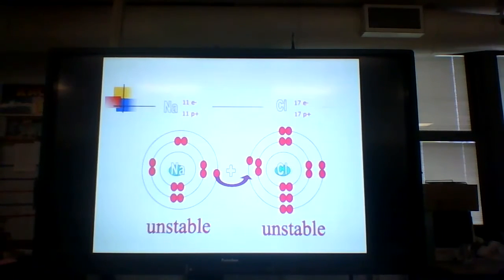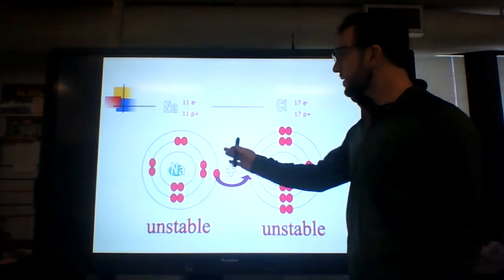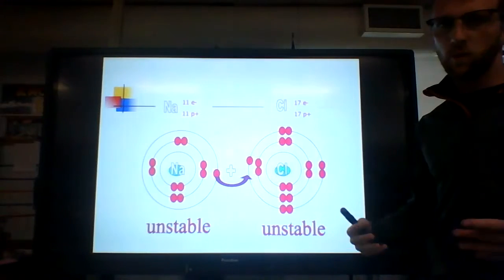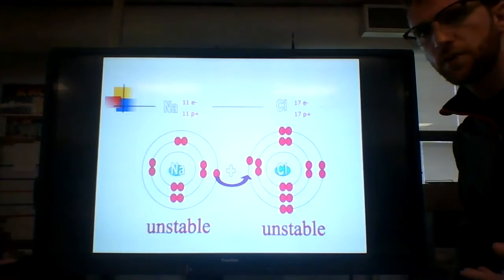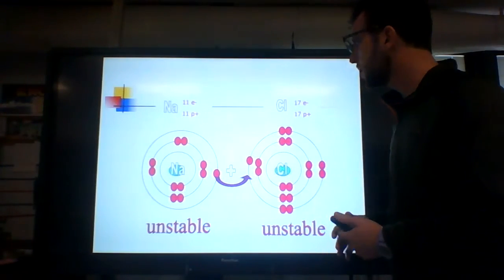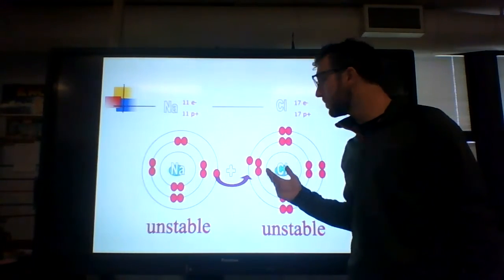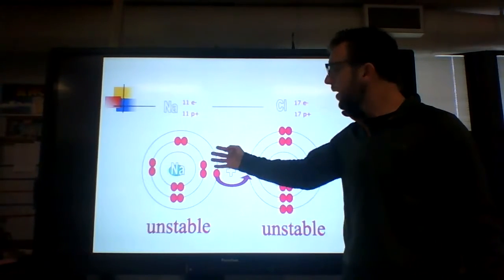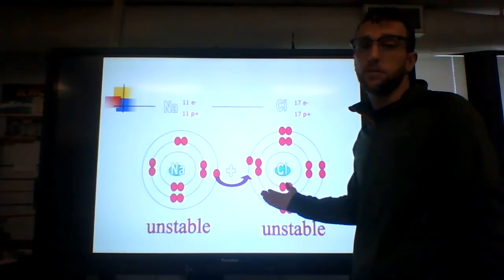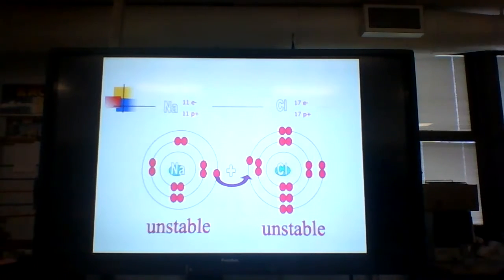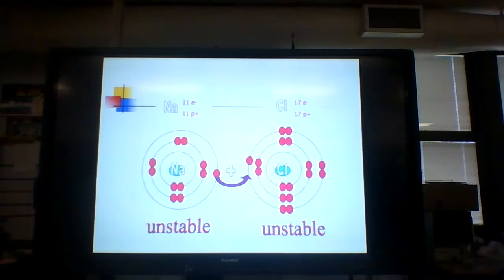These are two unstable atoms that become stable once they form a bond with one another. As I said earlier, you go from having individual atoms that on their own, when introduced to the human body, would be lethal — but when they form this compound, when they form this bond together, it becomes something essential that humans and really all animals need in order to survive. We need a base level of salts in our body.